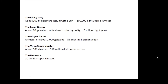Some facts about the Milky Way: it has about 200 billion stars and is about 100,000 light years in diameter. It's part of the local group of about 80 galaxies that feel each other's gravity, spanning about 10 million light years. Andromeda is about two and a half million light years away. The local group is part of the Virgo cluster, which contains about 2,000 galaxies.